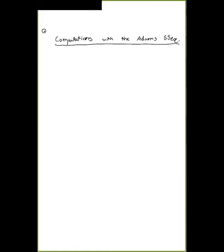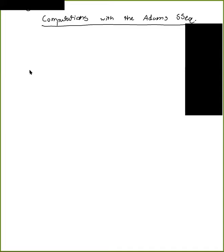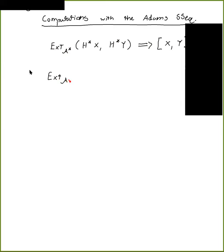As a reminder, the Adams spectral sequence has a cohomological and a homological form. The cohomological form goes from Ext over the Steenrod algebra of H-star X with H-star Y, and this converges to the homotopy classes of maps from X to Y. There's also a homological version which uses the homology of X and the homology of Y, converging to the same thing.